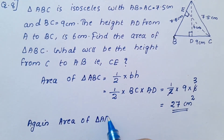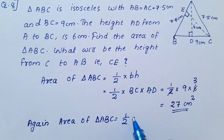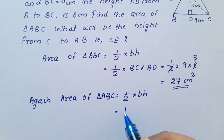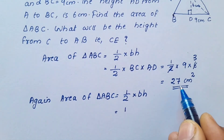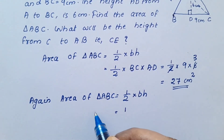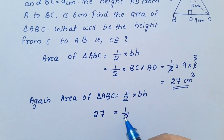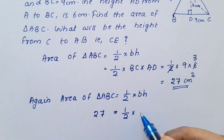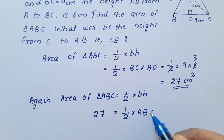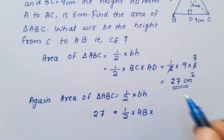Now for CE: area of triangle ABC also equals half into base AB into height CE.